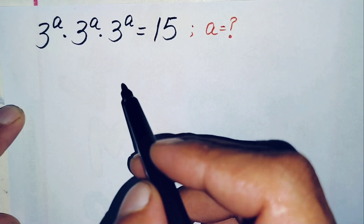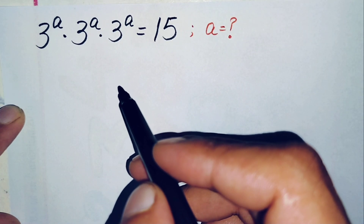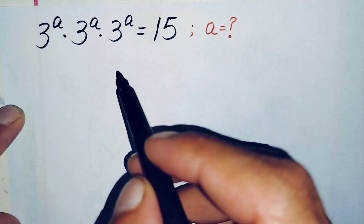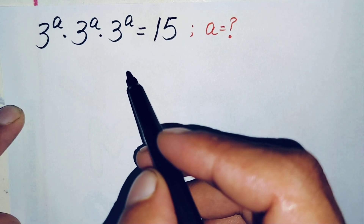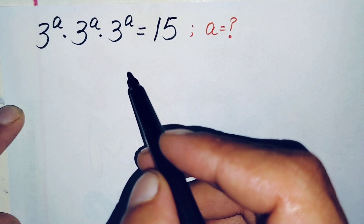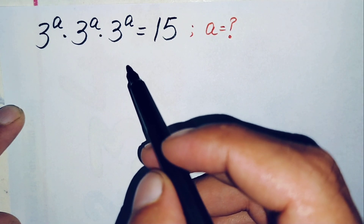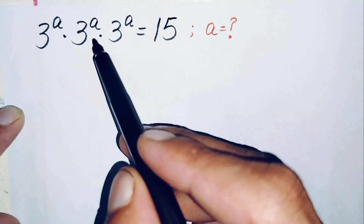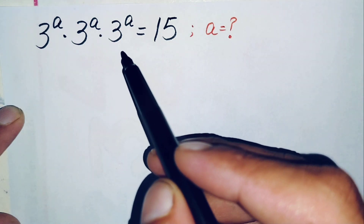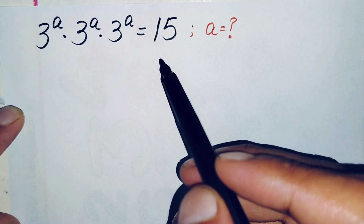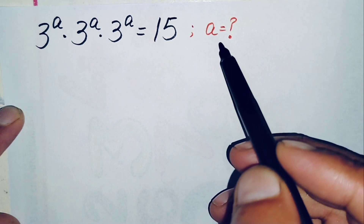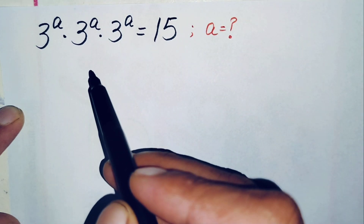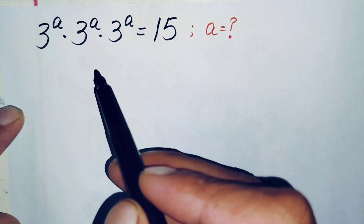Hello everyone, you are welcome. In this video I am going to find a step-by-step solution of this interesting exponential math problem. That is 3 raised to power a, times 3 raised to power a, times 3 raised to power a, is equal to 15. So here we will try to find the value of a.